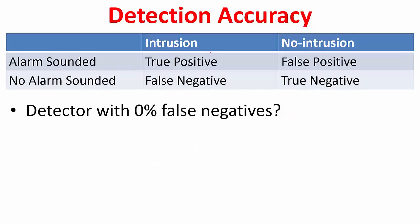In intrusion detection systems, detection accuracy is a very important metric. What it means is: in case there is an intrusion, did you sound an alarm? If you sounded an alarm, we call it a true positive. If you did not sound an alarm even though there was an intrusion, we call it a false negative. Ideally you want this false negative percentage to be zero — that is, when an intrusion happened, the number of cases where you did not sound the alarm should be zero.